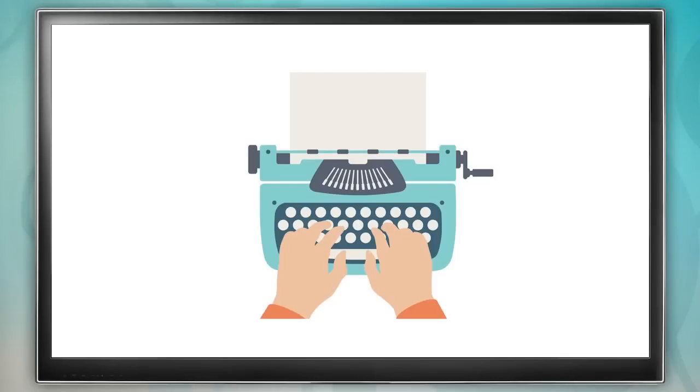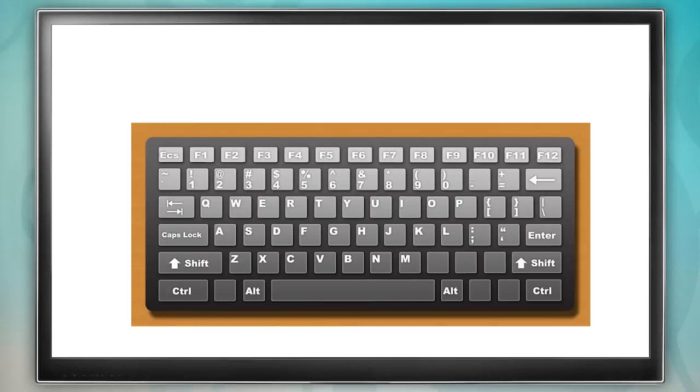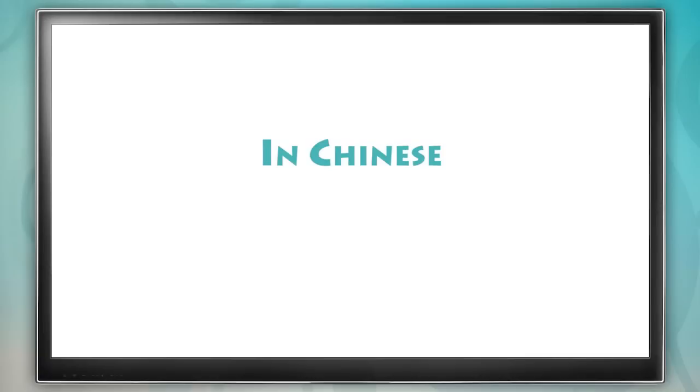When you type in English, you just hit the letters that you use to spell the word, right? So to type the word apple, you just hit the keys A-P-P-L-E, right? In Chinese, we do the same thing, using pinyin.